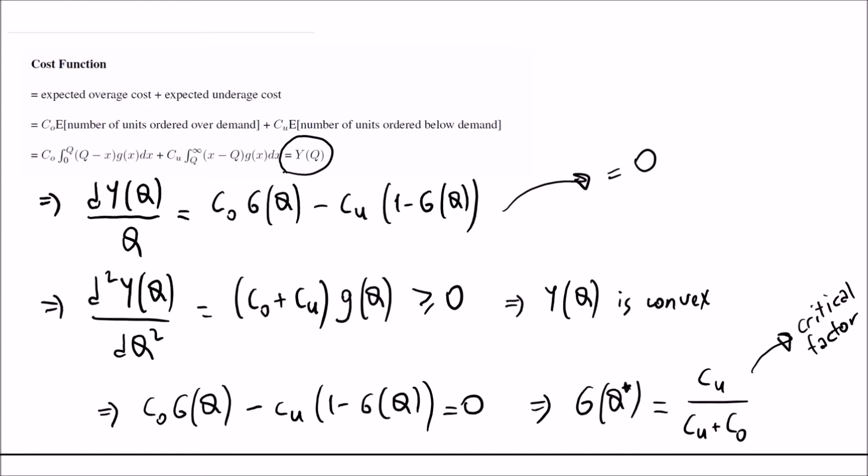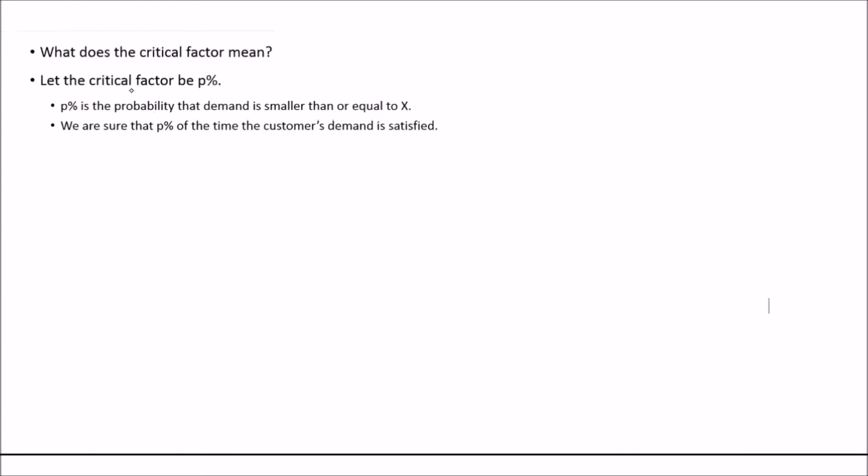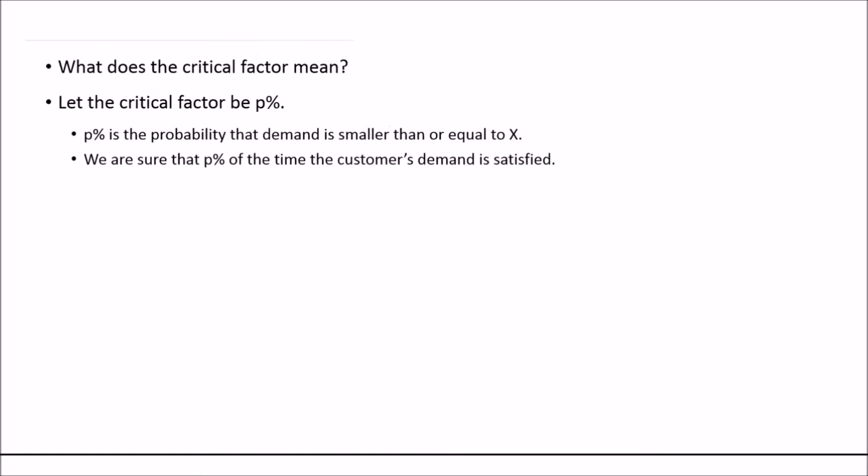We are going to call it the critical factor. Assume that after computing the critical factor we find the value P percent. This P percent gives us the probability that demand is smaller than or equal to a value X. In other words, we are sure that P percent of the time the customer's demand is satisfied. By using this critical factor, we are going to be able to determine the optimal order size.